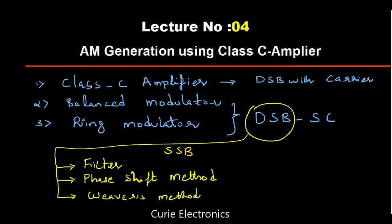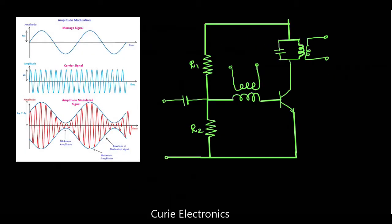In this video we will quickly see what is AM generation using class C amplifier. It is very simple. This is the circuit for AM generation using class C amplifier.